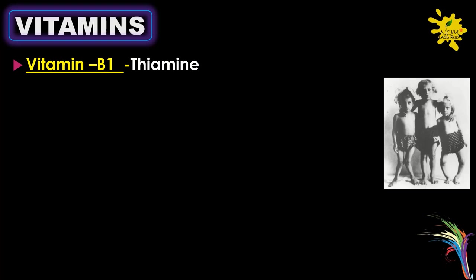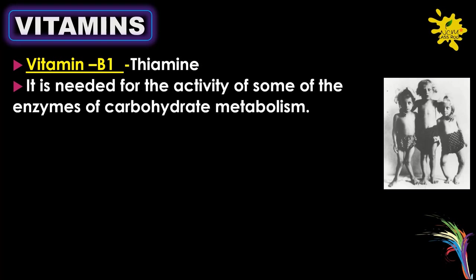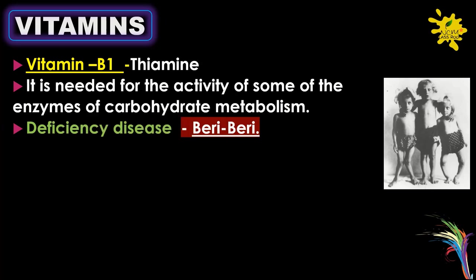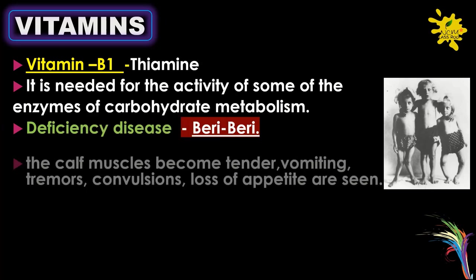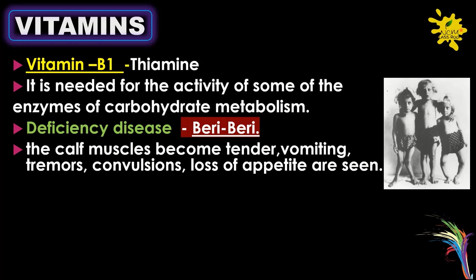Vitamin B1: the chemical name is thiamine. It is needed for the activity of some of the enzymes of carbohydrate metabolism. Deficiency disease is beriberi. The calf muscles become tender; vomiting, tremors, convulsions, and loss of appetite are the symptoms.